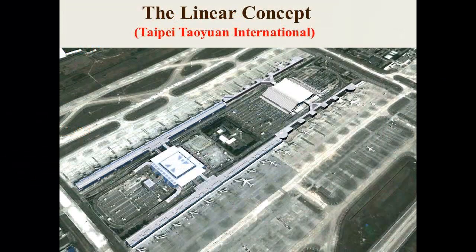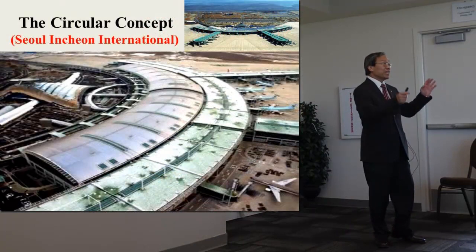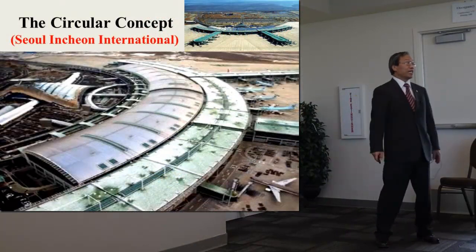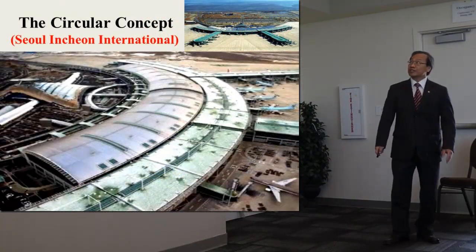The linear concept is simple and direct, very easy. Taipei Taoyuan International is a classic example. The circular concept is artistic and efficient.